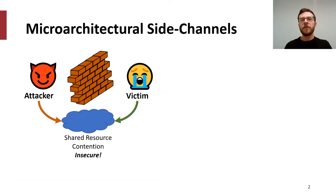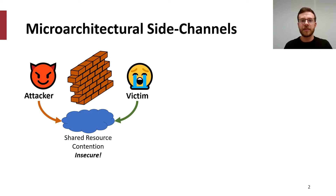Micro-architectural side channels have become a prominent issue in the computer architecture community. While there are now many hardware and software primitives to enforce isolation between an attacker and a victim, there are still very large attack surfaces which can result in information leakage. One such attack surface is through contention on shared resources, such as a memory controller, ring bus, or SMT port.